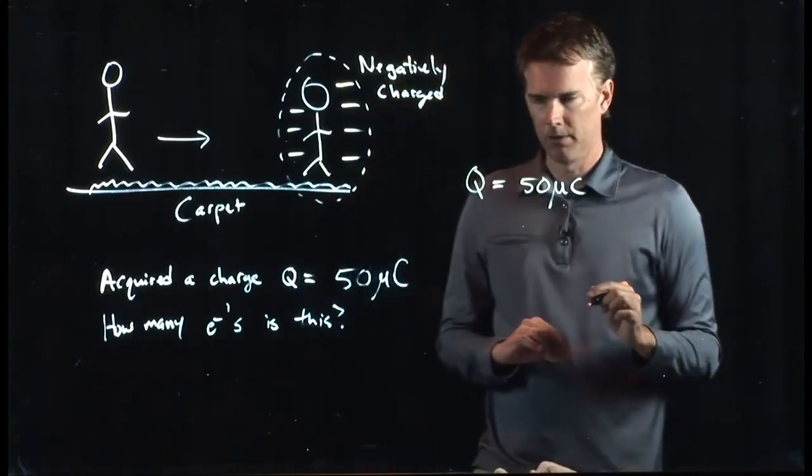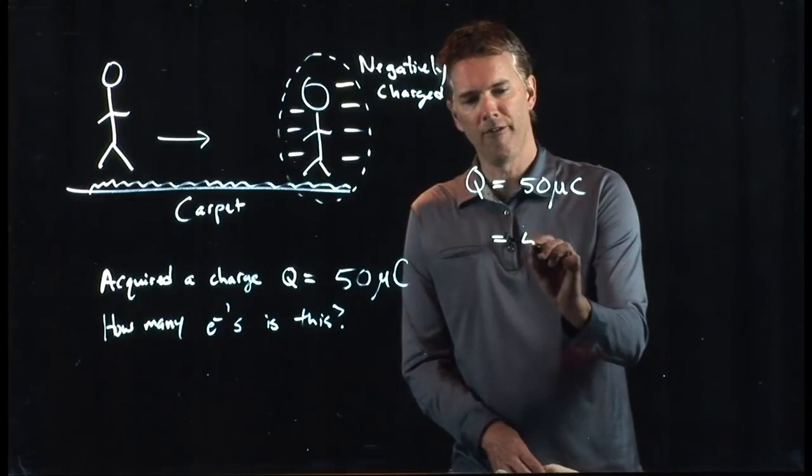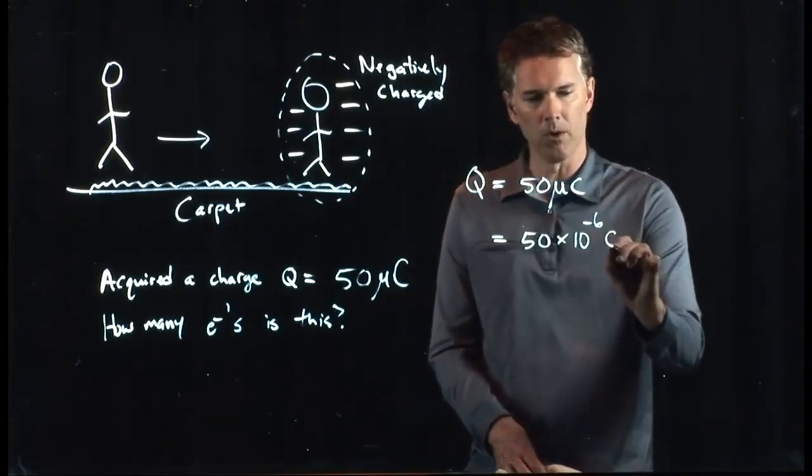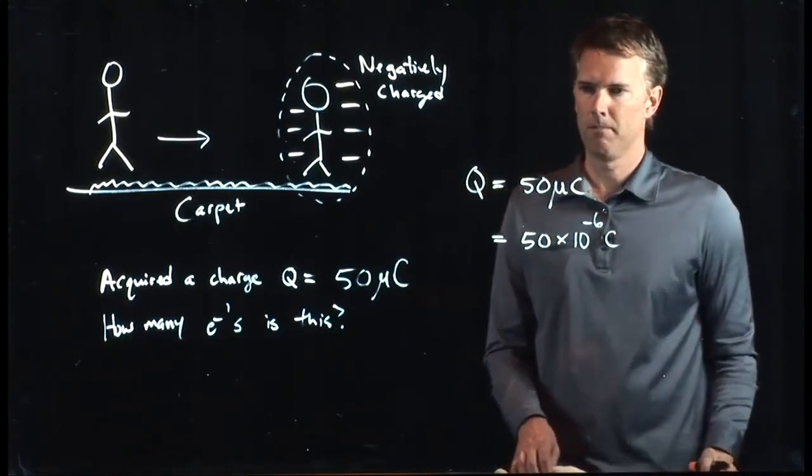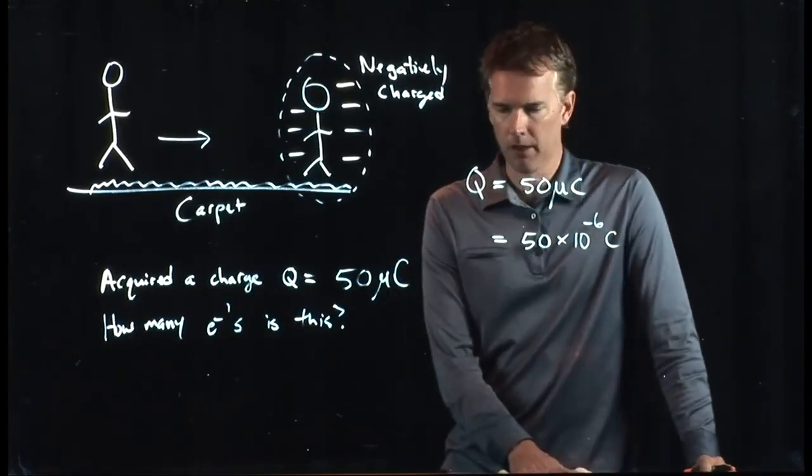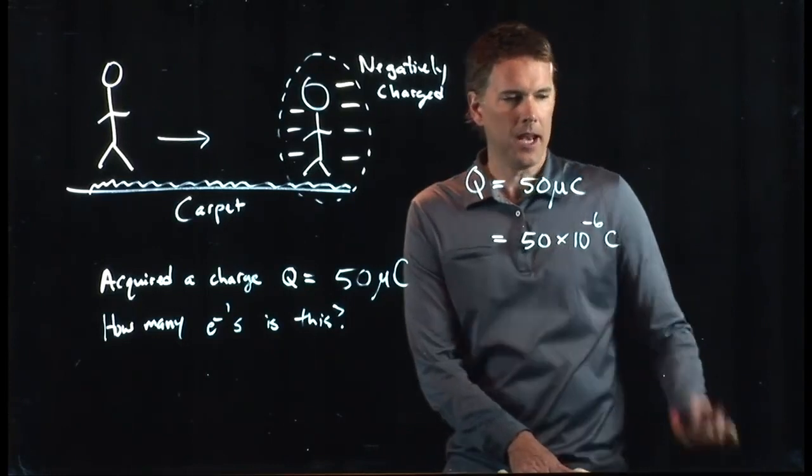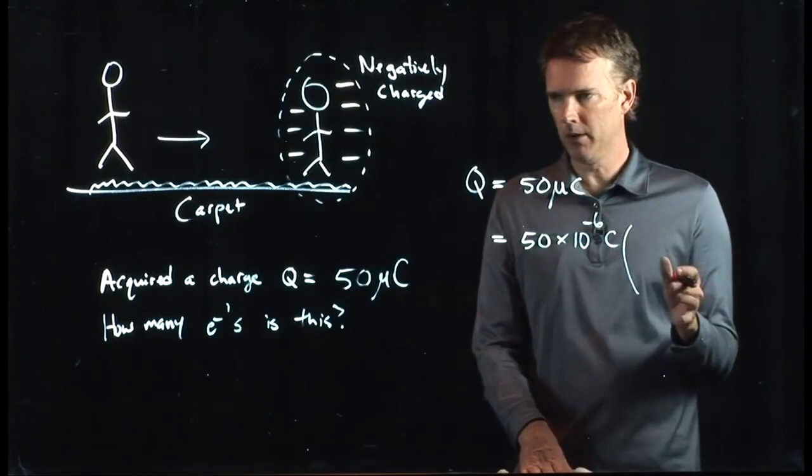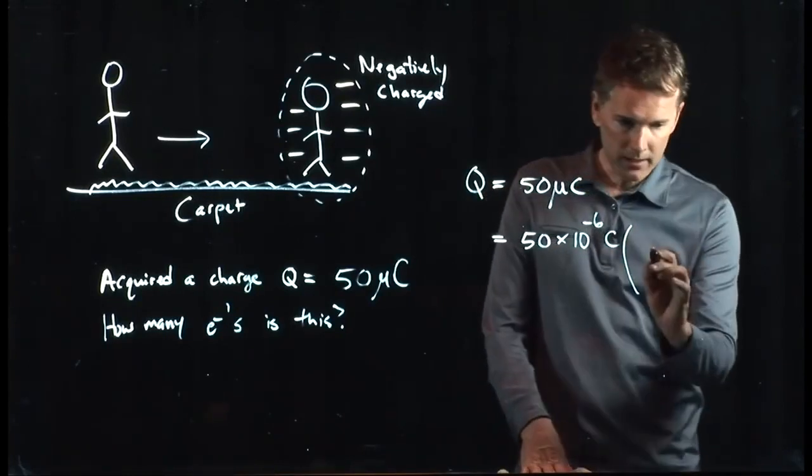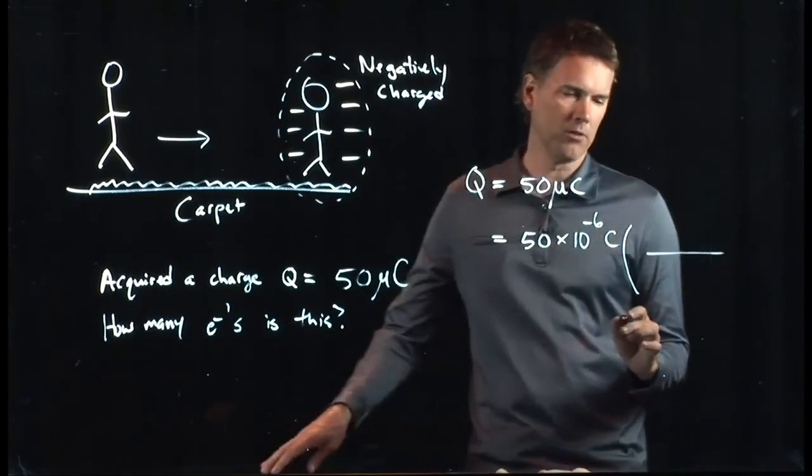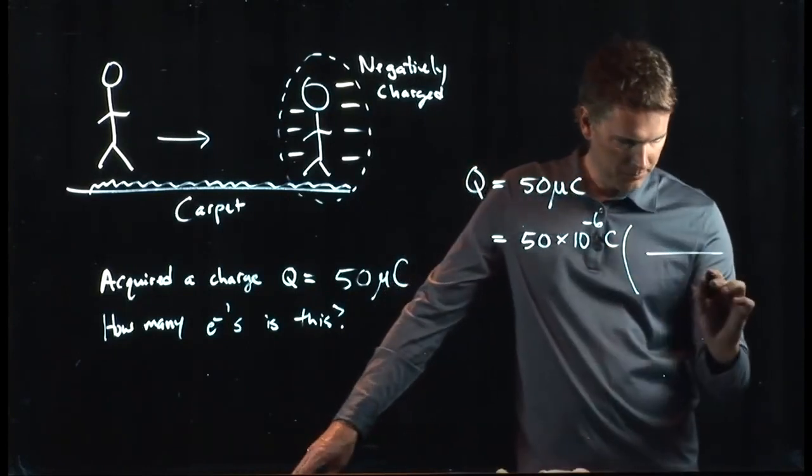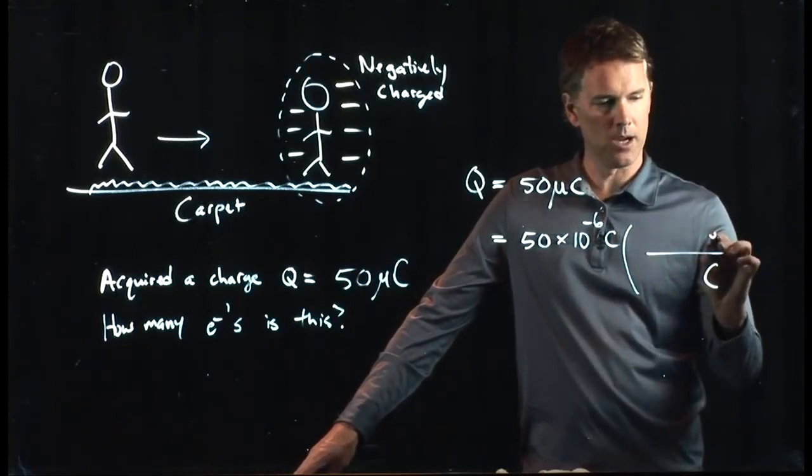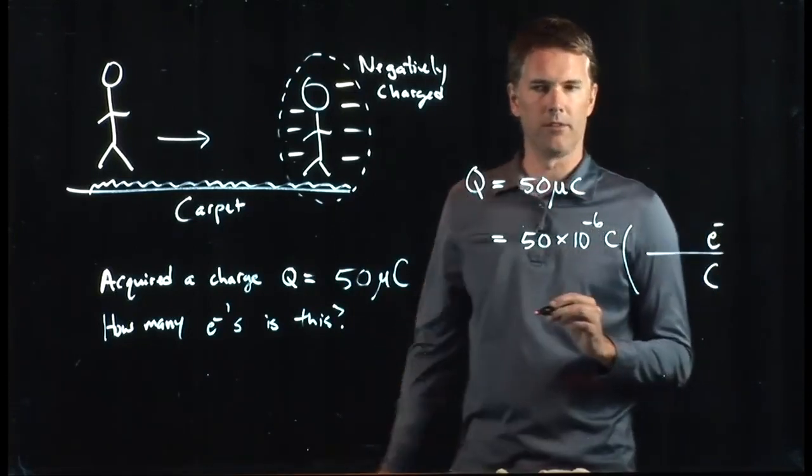50 microcoulombs is equal to 50 times 10 to the minus 6. That's what a micro means, right? Micro is a millionth, which is 10 to the minus 6. And now I want to multiply this by 1. Anytime you're converting units, you just want to multiply by 1. And you look at the units that you need to cancel. You need to cancel coulombs, so we had better put coulombs down in the bottom. We want to get electrons, so let's put electrons up in the top.